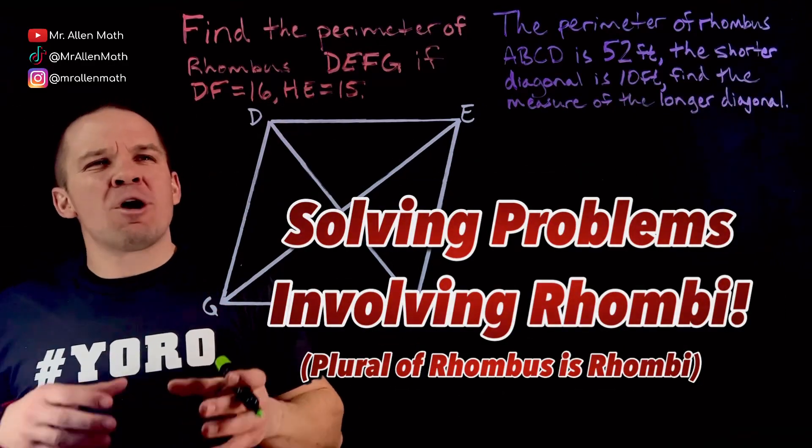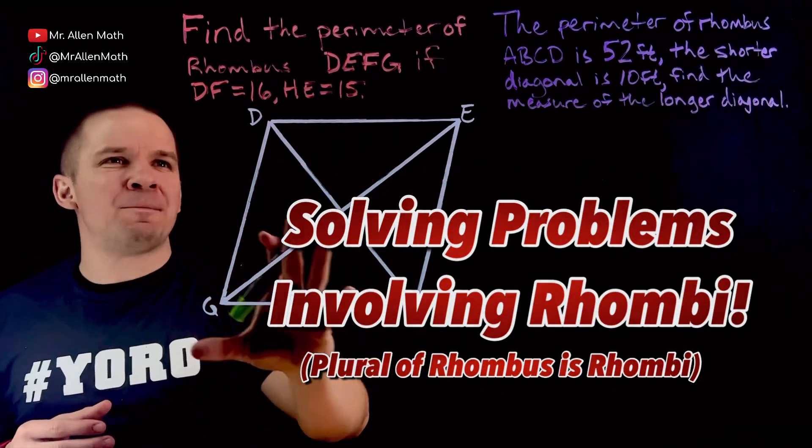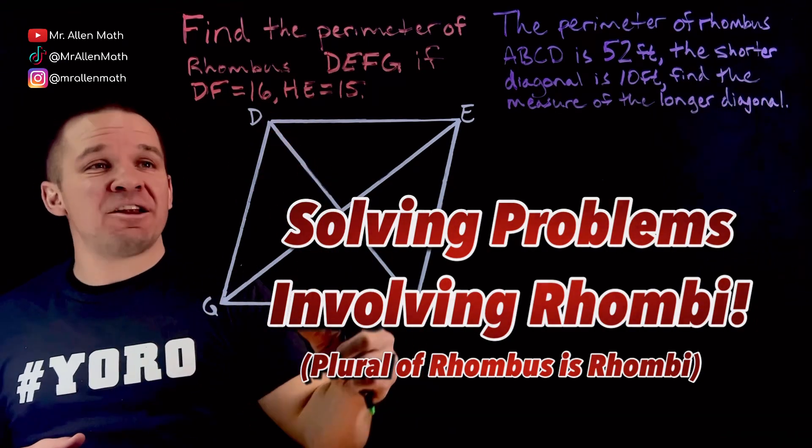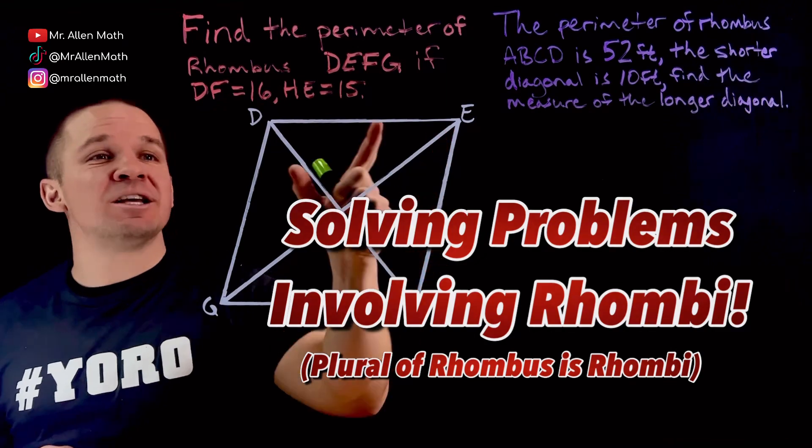What's poppin' dogs? Mr. Allen here. We are about to find the perimeter of this rhombus here if DF, that entire diagonal right there, is equal to 16 and if HE, that part right there, is 15.